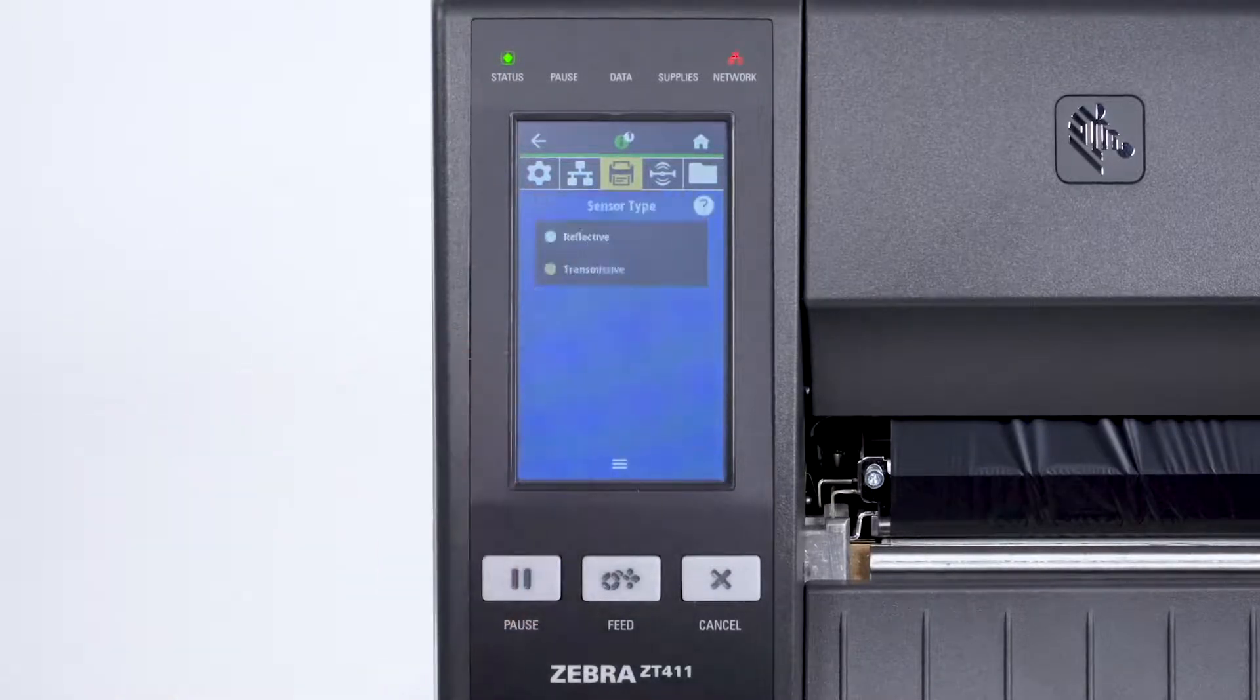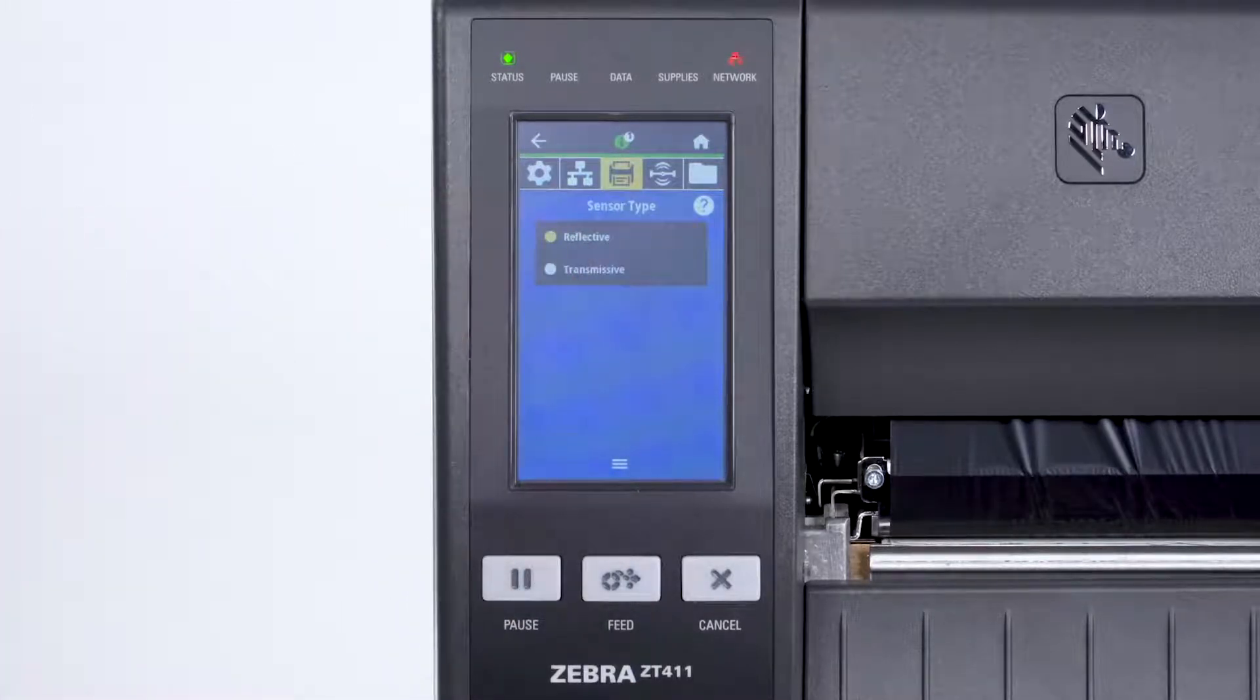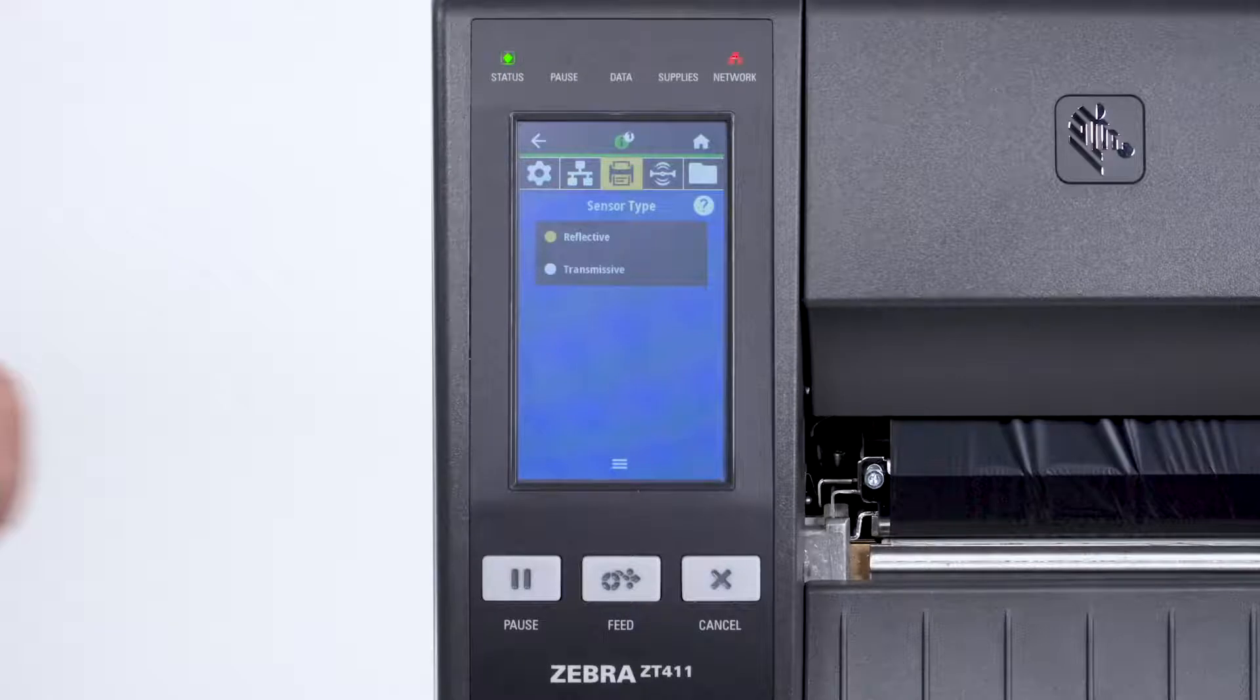Second, set the sensor type in the menu. For black mark media, set the sensor type to Reflective. For all other types of media, set the sensor to Transmissive.